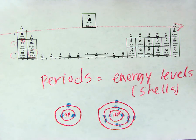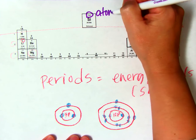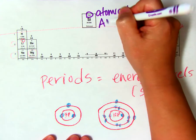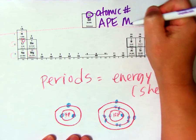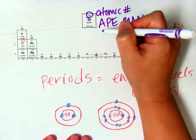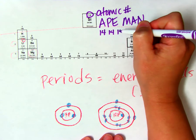Just a reminder, this is the atomic number. Okay, for APE MAN, this tells us how many protons there are, and how many electrons there are.